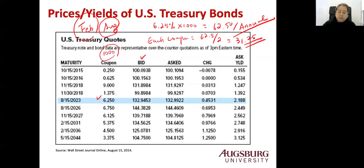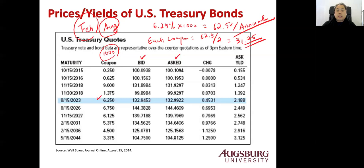There are two prices here: bid and ask price. The bond market is a dealer's market, which means the dealer purchases the bond from the issuer and sells the bond to the investor. The price the dealer pays to the issuer is called the bid price, and the price the dealer sells to the investor is called the ask price. There's a spread — that's the dealer's compensation. The bid price here is 132.9453% of par value, which means the price will be $1,329.45. The ask price is 132.9922% of par value, which is $1,329.92.